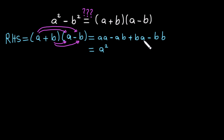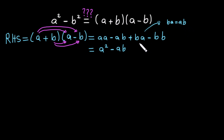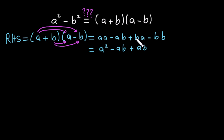Because a times b equals b times a — just like 2 times 3 is the same as 3 times 2 — we can write the middle terms as minus ab plus ab. These cancel each other out, so we are left with a squared minus b squared.